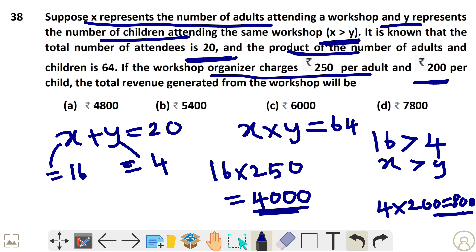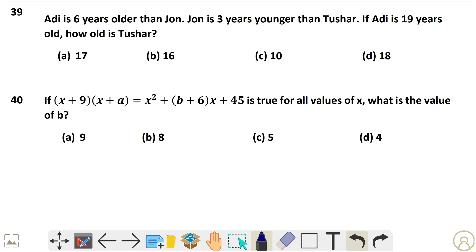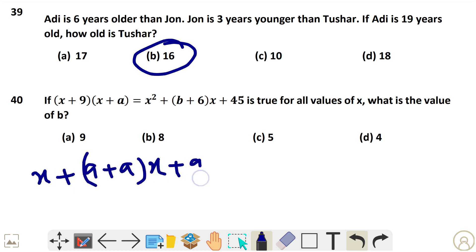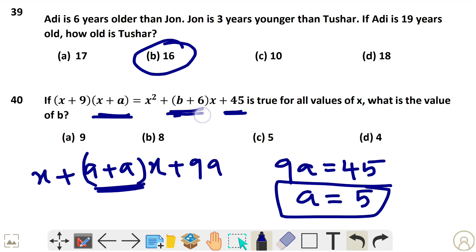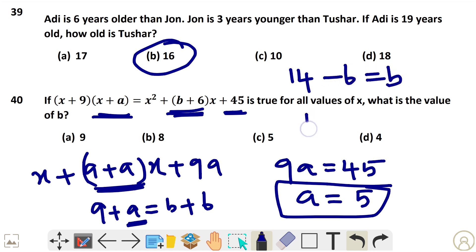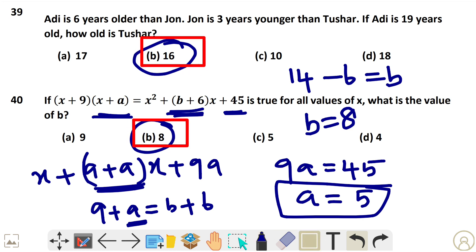Question 39: The answer is 16 — a straightforward question. Question 40: Given x + 9 + a times x and 9 times a are equal, so 9a = 45, giving a = 5. Then 9 plus a = b plus 6: 9 plus 5 equals 14, so b = 14 minus 6 = 8. The answer is 8. Thank you for watching this part and the previous three parts.